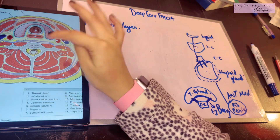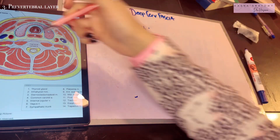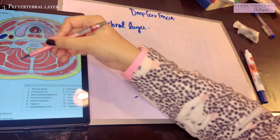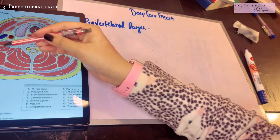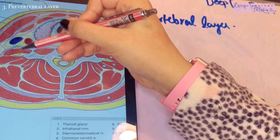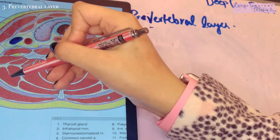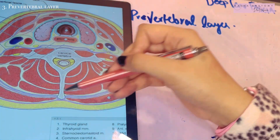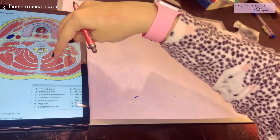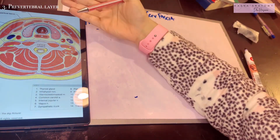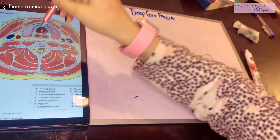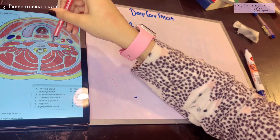Now let's talk about the pre-vertebral layer of the cervical fascia. It lies close to the vertebra and mostly contains all the vertebral muscles: the longus colli, scalinus anterior, scalinus medius, scalinus posterior, levator scapulae, and all the paravertebral muscles. Superiorly, the pre-vertebral layer is attached to the base of the skull. Inferiorly it splits into two layers: a posterior layer that becomes continuous with the anterior longitudinal ligament, and an anterior layer known as the alar fascia.